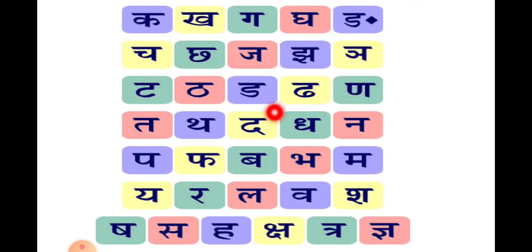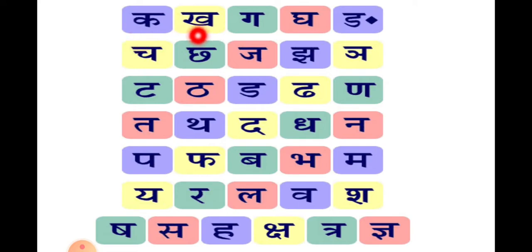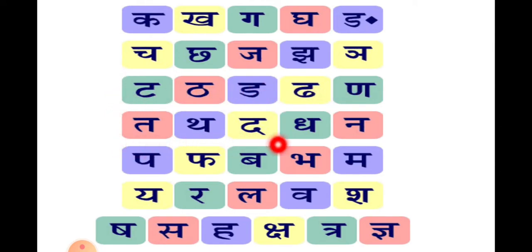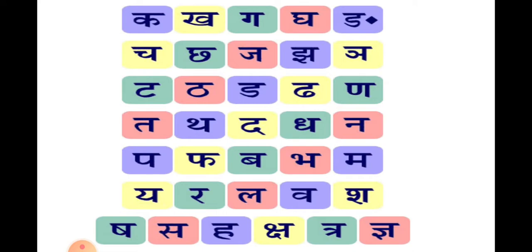Each line is called a Varg. So what is the first line? कवर्ग, right? And चवर्ग, तीसरा टवर्ग, तवर्ग, पवर्ग, यवर्ग, and शवर्ग. So हम देखेंगे — what is the first letter of कवर्ग?